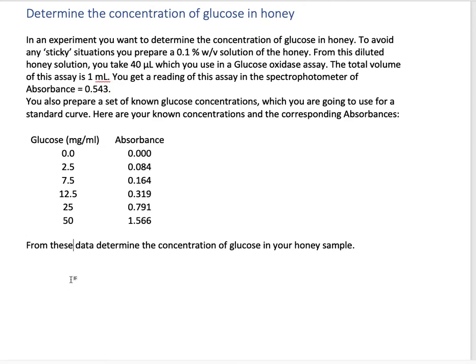It's a good idea to diagram our procedure. We start with our pot of honey. From this, we prepare a 0.1% weight per volume solution. Let's do the diagram first - here we have our diluted honey solution.